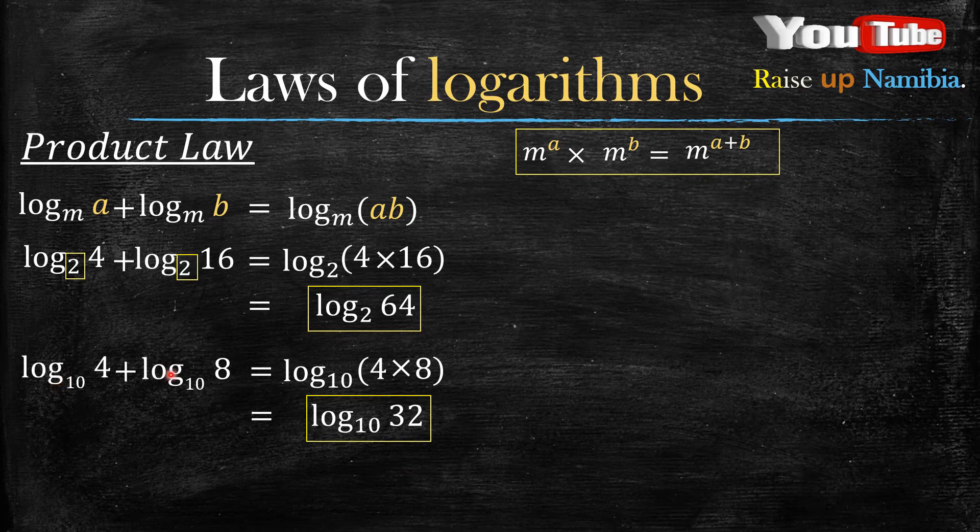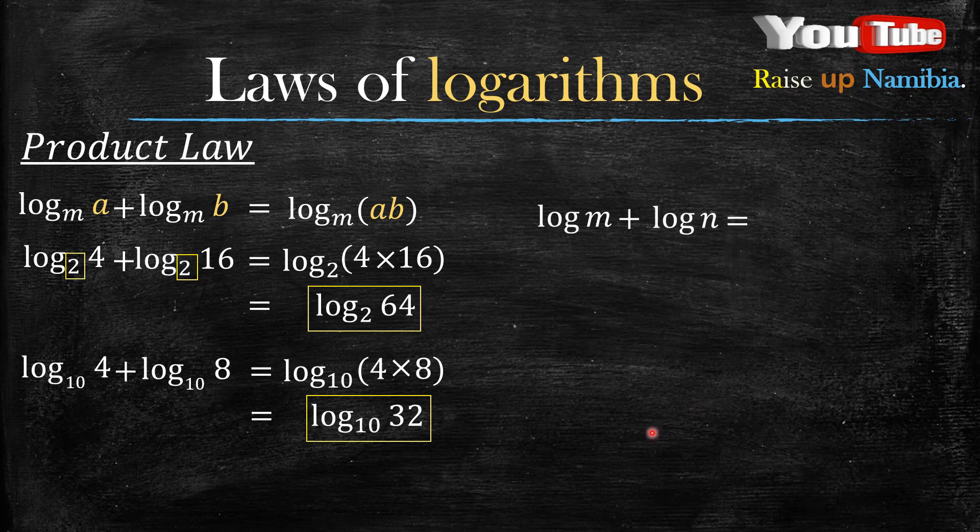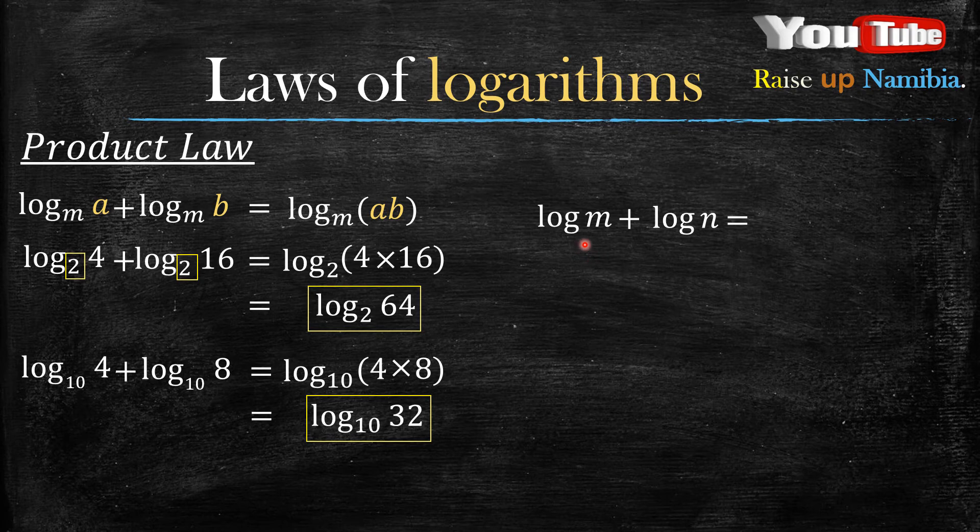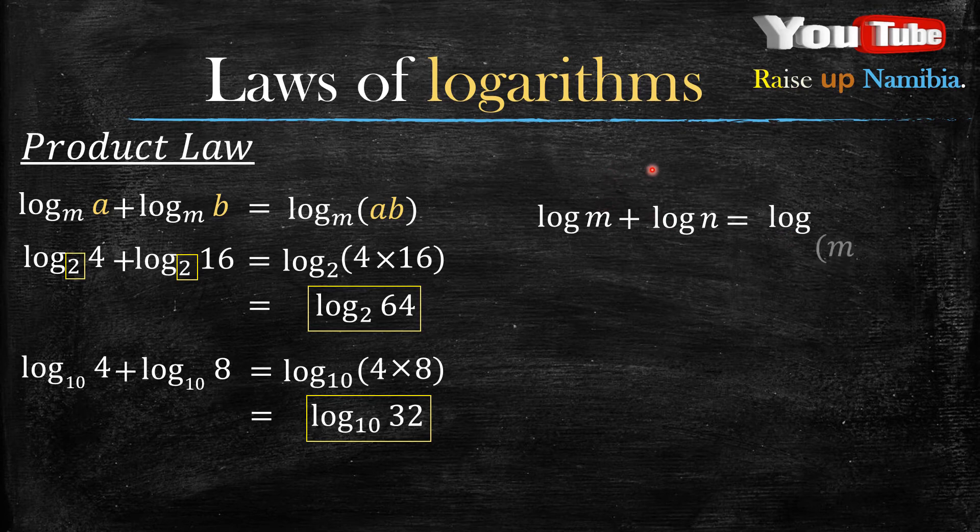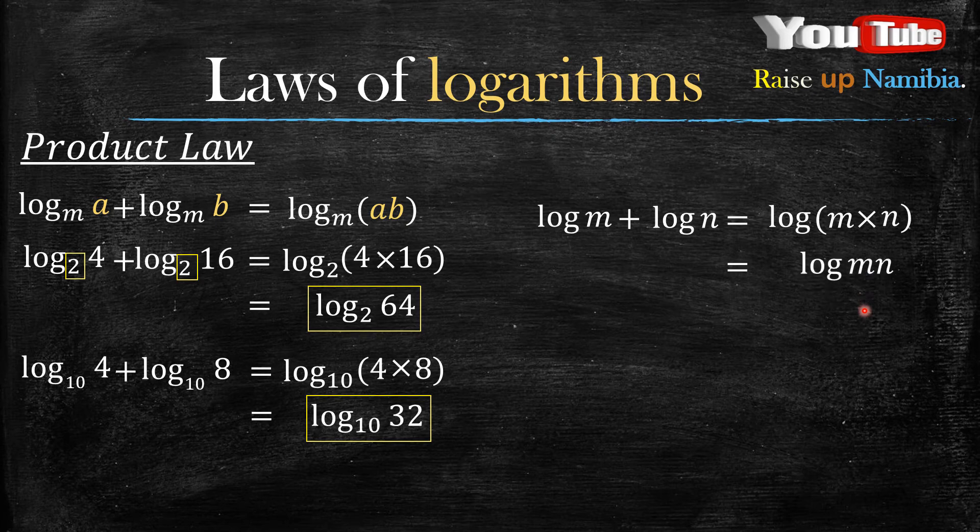How about when you are given log of m plus log of n, with no base written? This is also a common logarithm, meaning the basis is 10. It's not compulsory to write 10 there, so you can write the answer as just log, and then you multiply m with n, which gives you log of mn. Because it's base 10, you can choose not to write it.